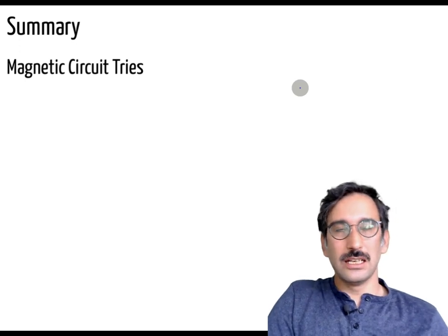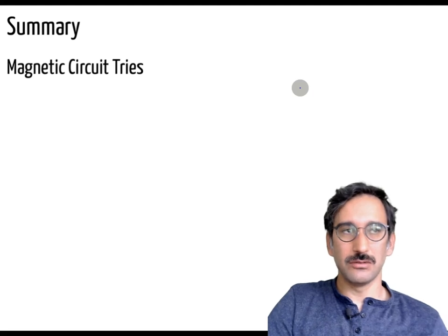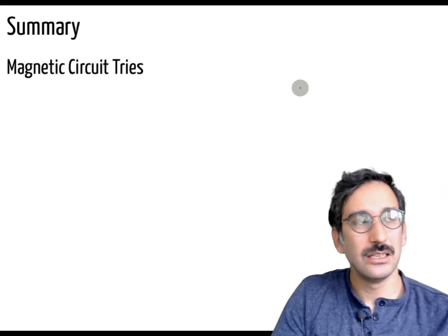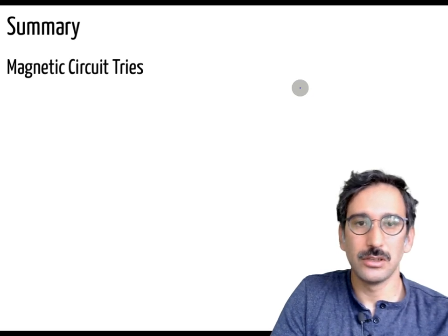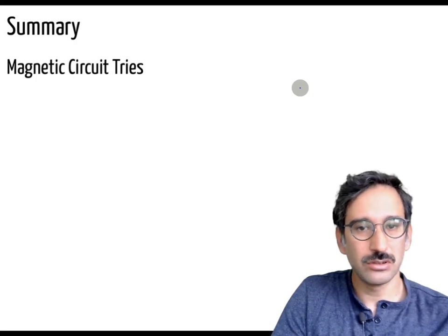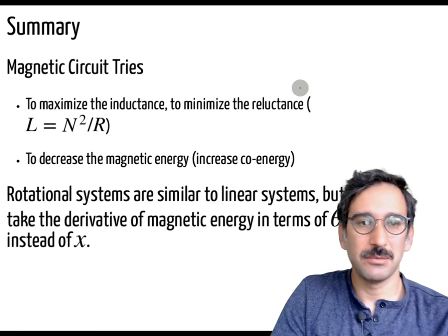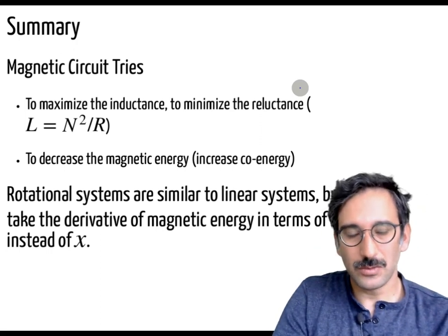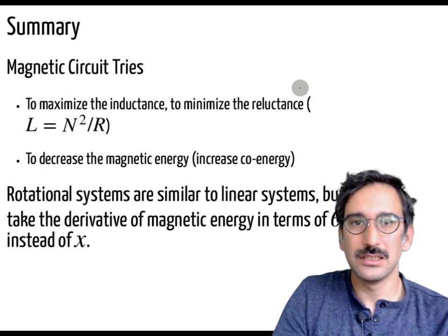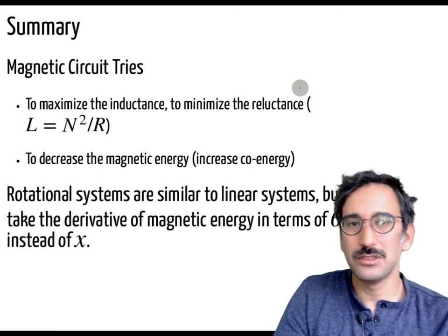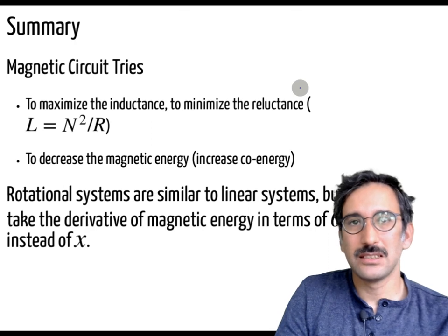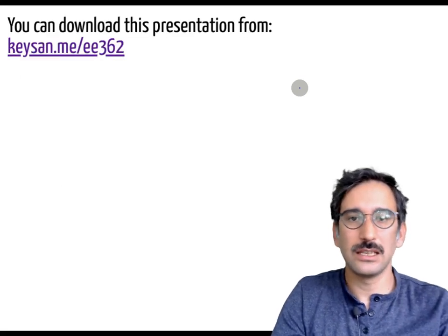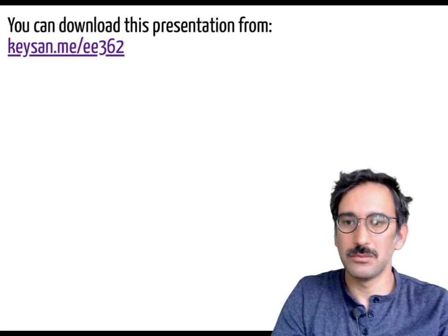In short, there is nothing fundamentally different in rotational systems. We will cover more numerical problems and multiply-excited systems next week. Please review magnetic circuits and electromechanical energy conversion from your notes. All systems try to maximize inductance and minimize reluctance, decreasing magnetic energy. Rotational systems are no different from linear systems — just replace x with θ to obtain torque instead of force.